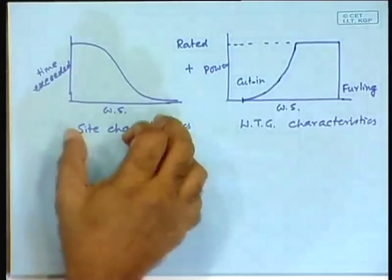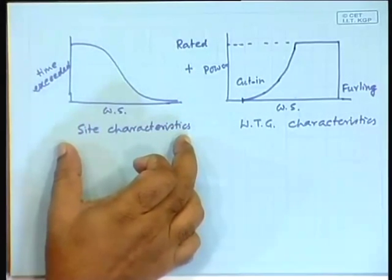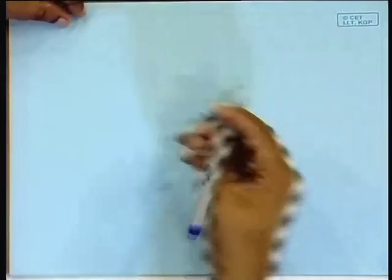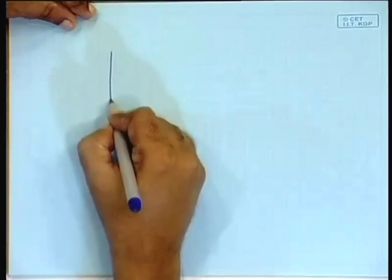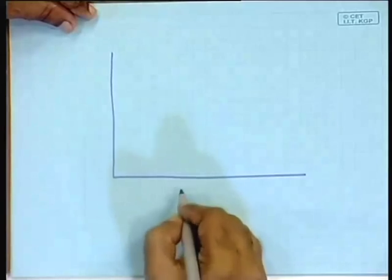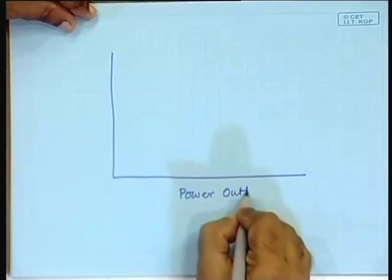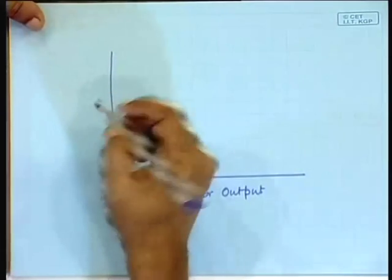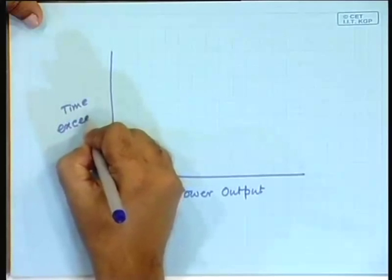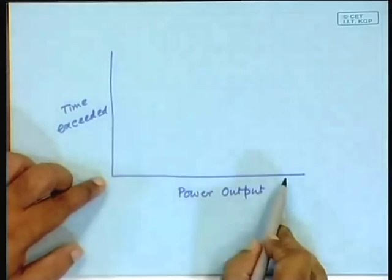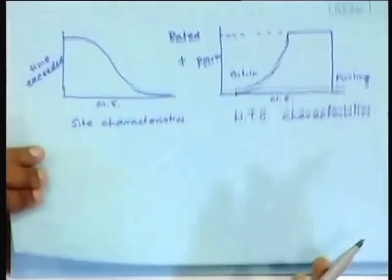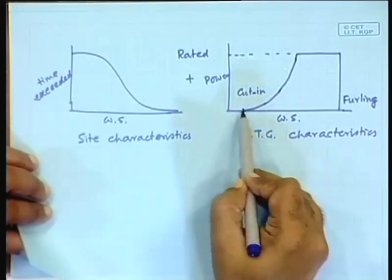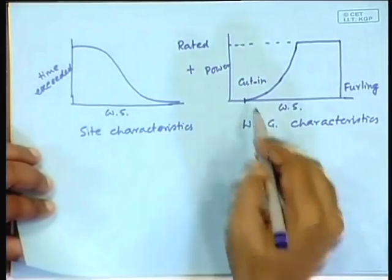We have the site characteristic and the generator characteristic. These two have to be matched by obtaining the power duration characteristic — power output on one axis and time exceeded on the y-axis. The power output for any value of wind speed is given by the generator characteristics. Following the cubic characteristic, the power is k times v-cubed, where k is essentially half-rho times area times Cp.